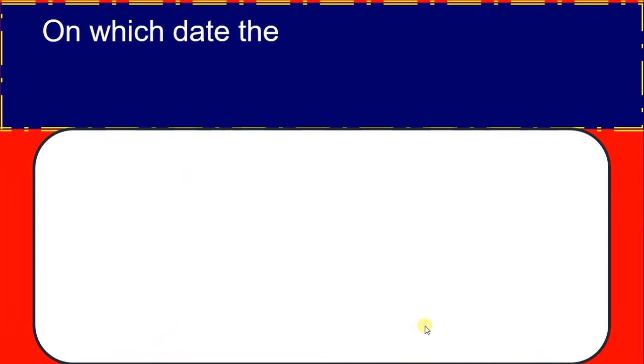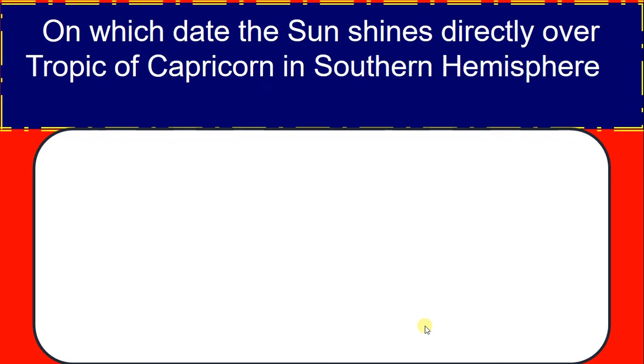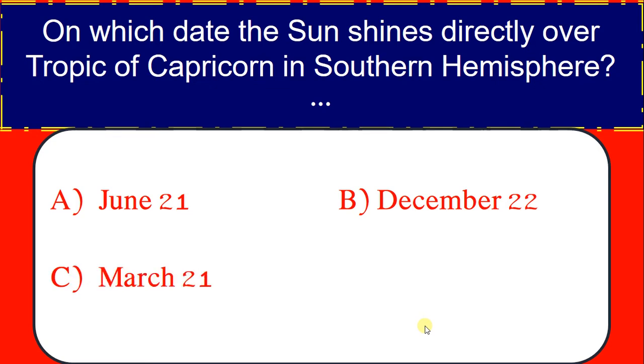And which date the sun shines directly over the tropic of Capricorn in the southern hemisphere? June 21st, December 22nd, March 21st, September 23rd. Correct answer, December 22nd.